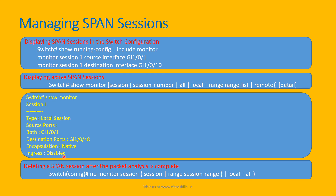When ingress is disabled, it means the destination port cannot transmit back to the network. After completing packet analysis, you can delete the SPAN session using no monitor session [session-number or range or all]. That concludes this section on using switch port mirroring to monitor traffic.